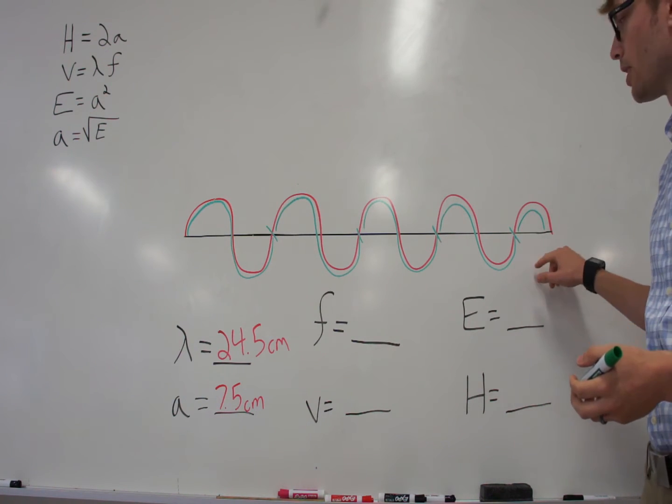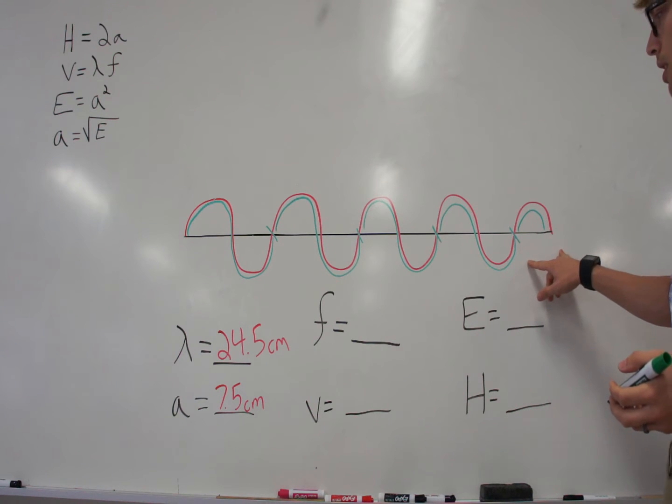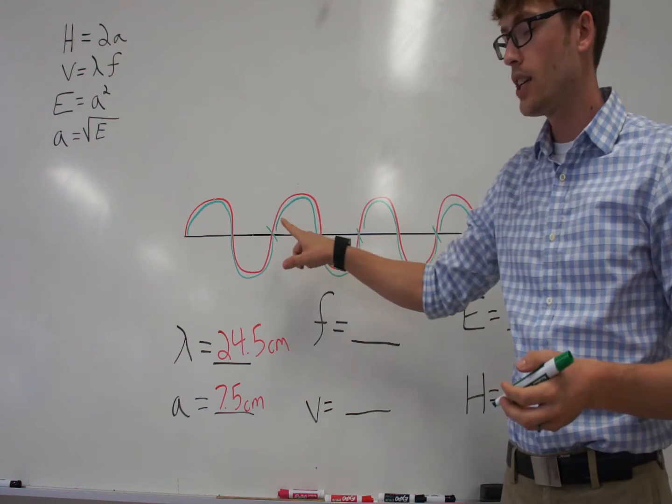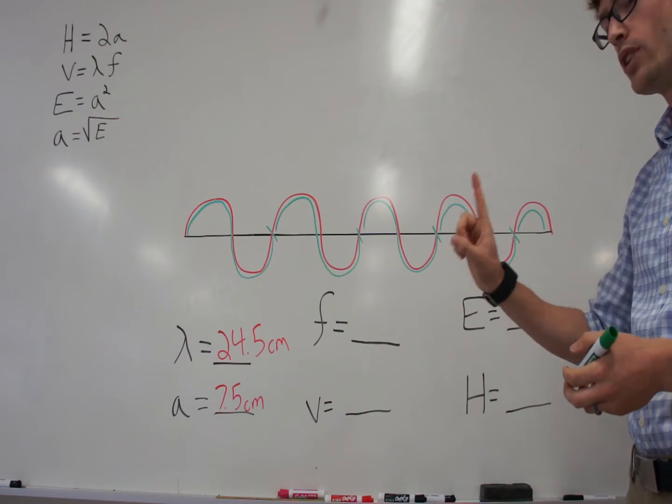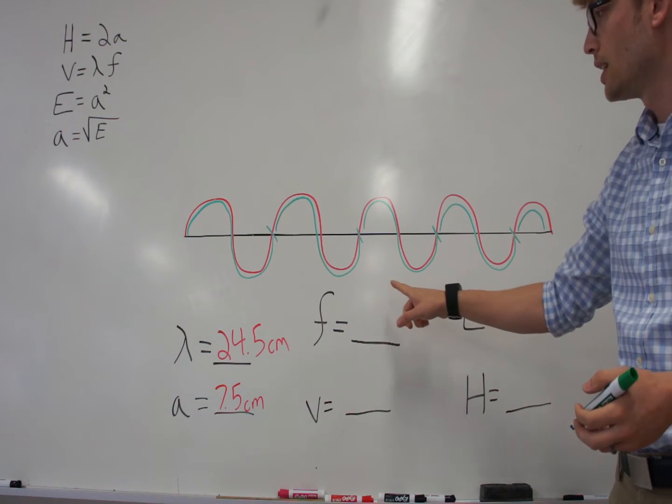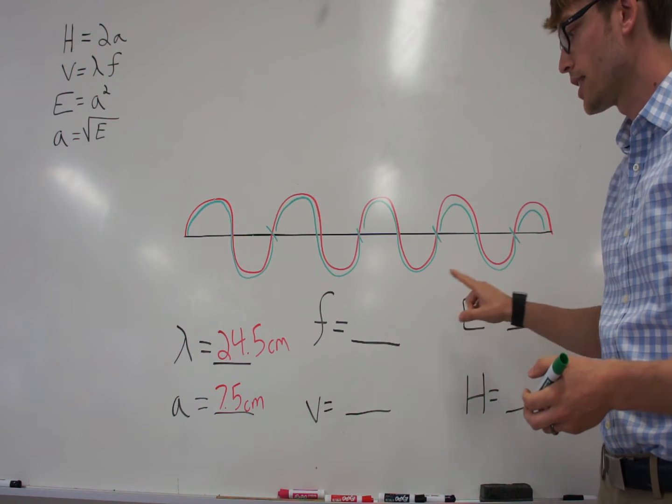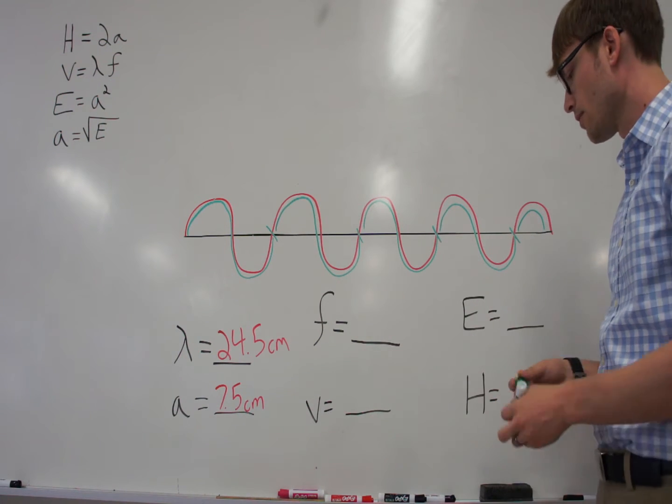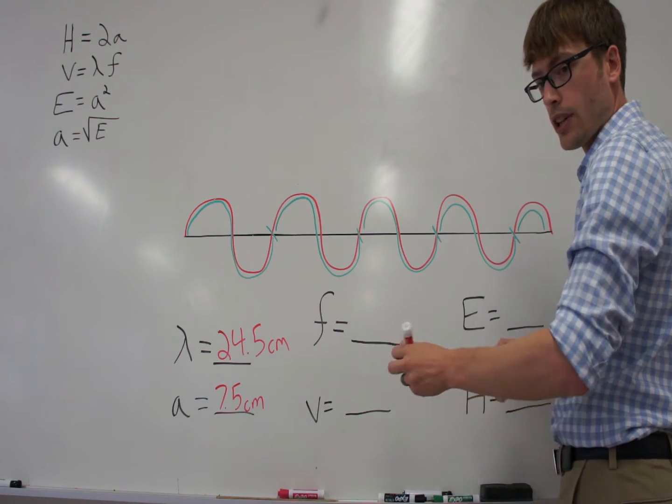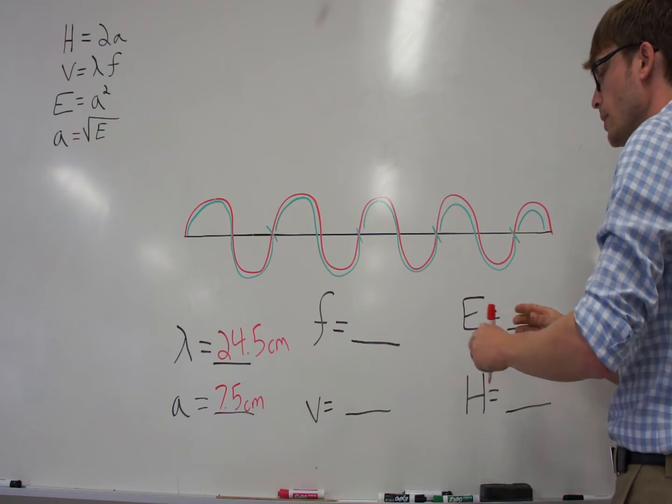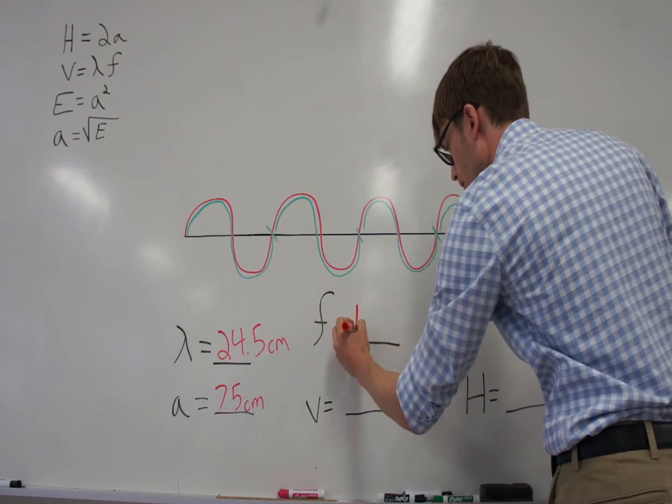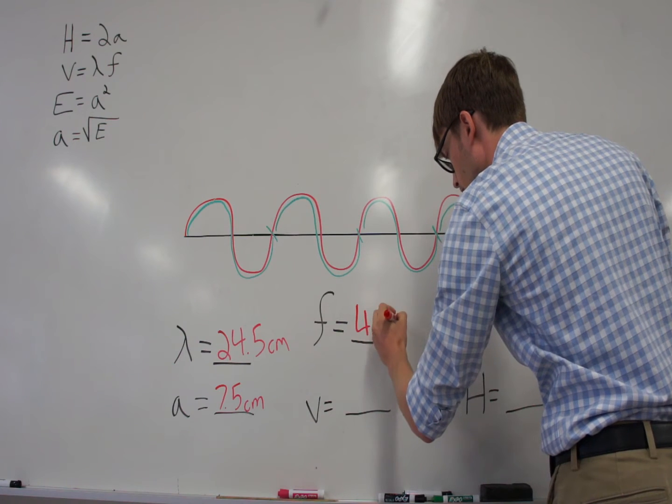So there are 4.5 wavelengths on this wavetrain. Since all of our wavetrains in seventh grade are going to be for one second in time, that means however many wavelengths there are on a wavetrain, that's the exact same thing as your frequency. And of course, the frequency is measured in hertz, so we have 4.5 hertz.